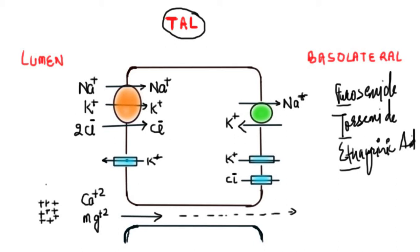Looking at the normal physiology of the thick ascending limb of the loop of Henle: on the basolateral side there is an ATP-dependent transport mechanism which pumps sodium out of the cell, creating a sodium gradient across the luminal membrane. Via another transporter protein, sodium is pumped from the lumen into the cell, and along with it, potassium and chloride ions are also transported from the luminal side into the cell.